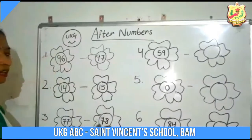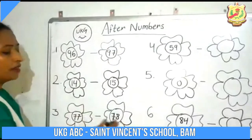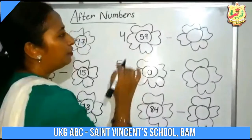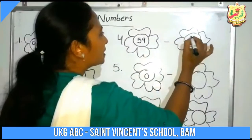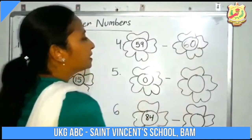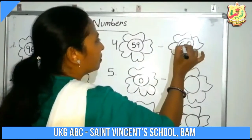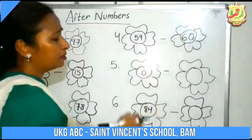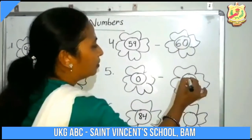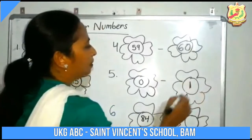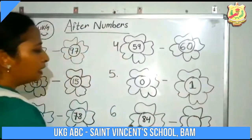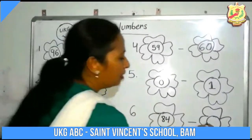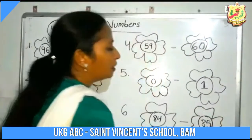The next number: 77. What comes after 77? 77 after is 78. Then 59 — after 59, which number comes? 60. Then 0 — after 0, which number comes, children? 1. Then 84 — after 84 is 85.